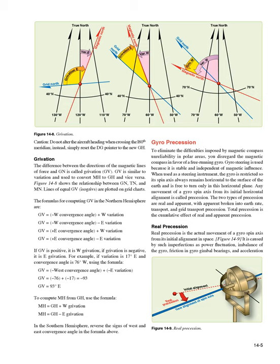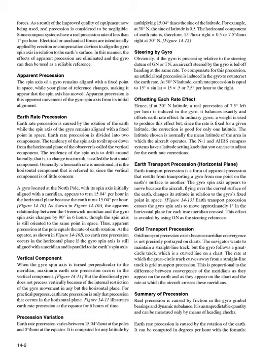Real precession. Real precession is the actual movement of a gyro spin axis from its initial alignment in space (figure 14-9). It is caused by such imperfections as power fluctuation, imbalance of the gyro, friction in gyro gimbal bearings, and acceleration. As a result of the improved quality of equipment now being used, real precession is considered to be negligible. Some compass systems have a real precession rate of less than one degree per hour.